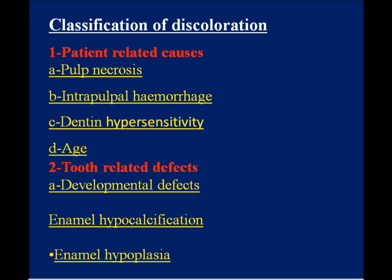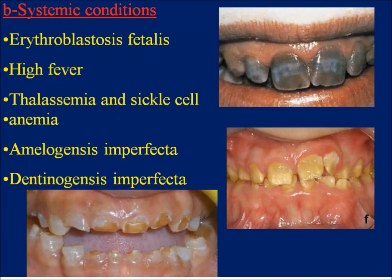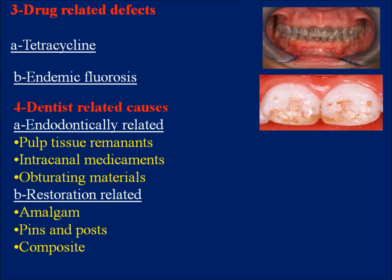Number two: tooth-related defects. A. Developmental defects: enamel hypocalcification, enamel hypoplasia. B. Systemic conditions: erythroblastosis fetalis, high fever, thalassemia and sickle cell anemia, amelogenesis imperfecta, dentinogenesis imperfecta. Number three: drug-related defects. A. Tetracycline. B. Endemic fluorosis.